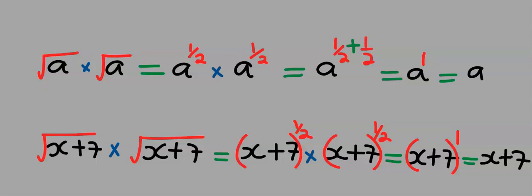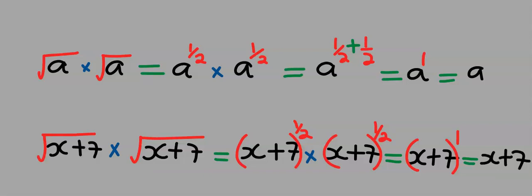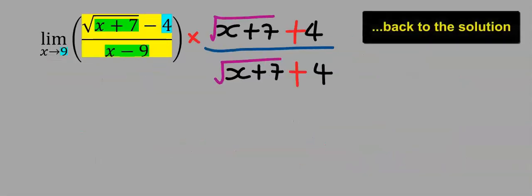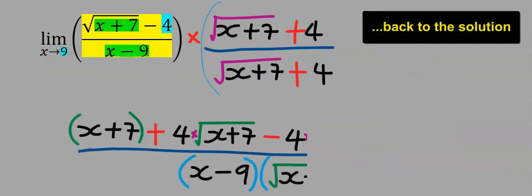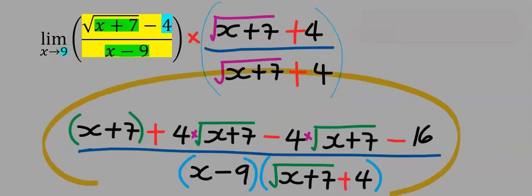Here, a can be anything — for example, a can represent x plus 7. From the law of indices, it returns x plus 7. We are going to apply this to the function, and hence this function becomes the next function.